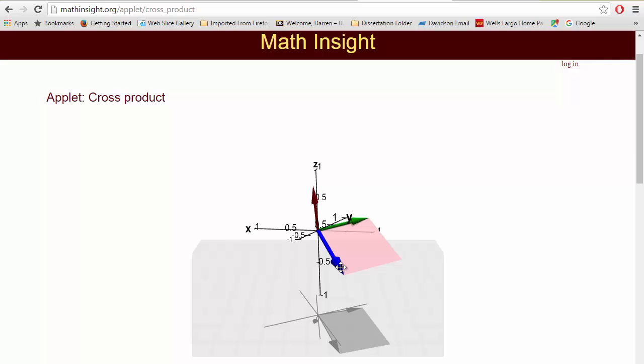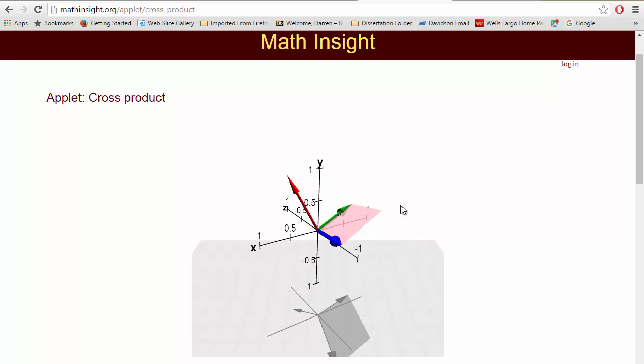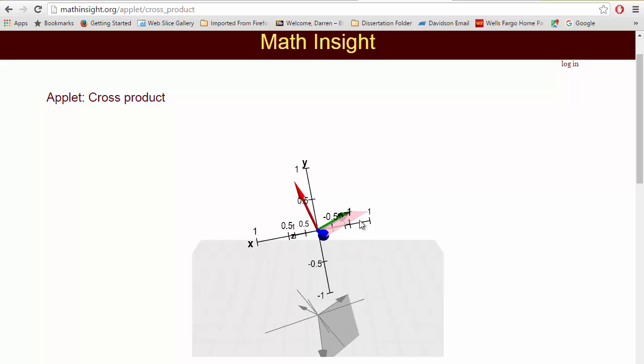Now there's another thing that I want to talk about really briefly with you guys. Notice that in this applet, this little pink rectangle or parallelogram right here is, why would they emphasize that? Well, one of the definitions of a cross product is that the magnitude of this vector is always equal to the area of this parallelogram.